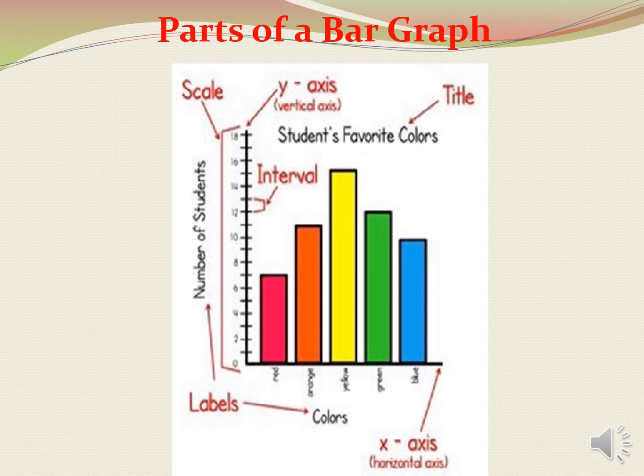Next, we have scale. You can see numbers from 0 to 18 on y-axis. These numbers have an interval of 1. Therefore, the numbers are 0, 1, 2, 3, 4 and so on. Children, please note the intervals can change. For example, if I take the interval as 5, so my numbers on y-axis will be 0, 5, 10, 15, 20 and so on.